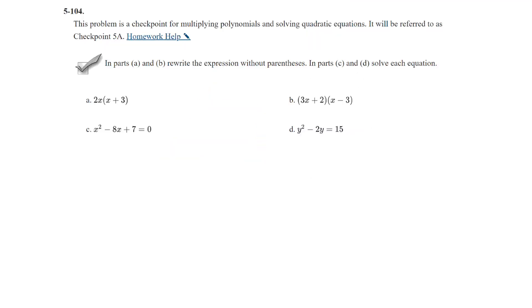Question 104. This problem is a checkpoint for multiplying polynomials and solving quadratic equations. It will be referred to as checkpoint 5A. So once again, these checkpoints really mean that we should have mastered these concepts up to this point. This one includes two things, multiplying polynomials and solving quadratics. So it looks like we have two multiplying and two solving. So let's go ahead and get started. Part A, we are multiplying what's called a monomial one term times a binomial. So 2x times x is 2x squared. 2x times 3 would be 6x. And there's nothing to solve here. So this would be your answer. That's it.